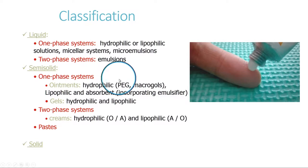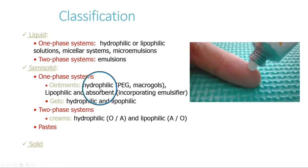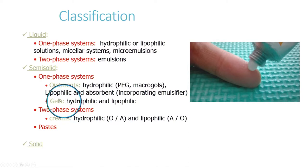If ointments are hydrophilic they are mainly made of ethylene glycols or macrogols; if lipophilic, they are made of different excipients. We also have absorbent ointments, which incorporate a surfactant and are able to absorb low amounts of water. We also have gels, which can be hydrophilic or lipophilic and are mainly made of 70 to 90% water or oil plus a viscosity-increasing substance.